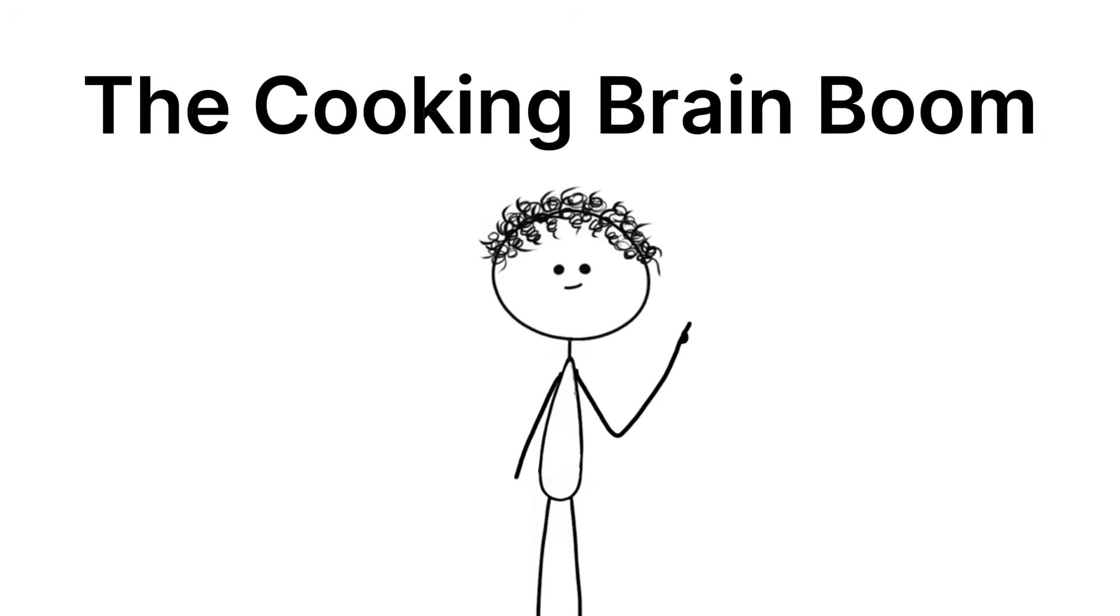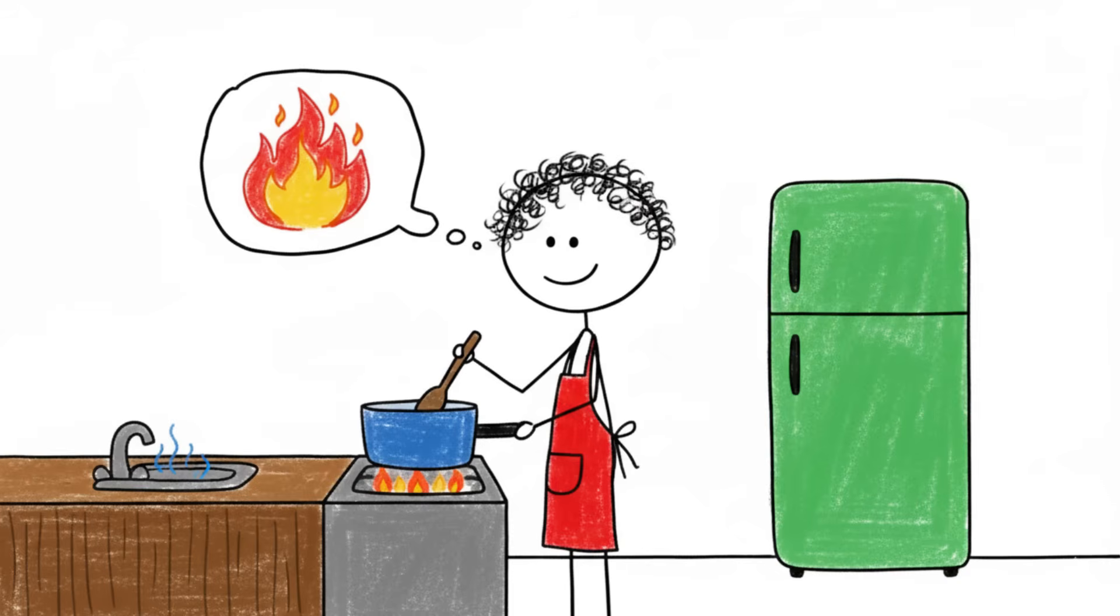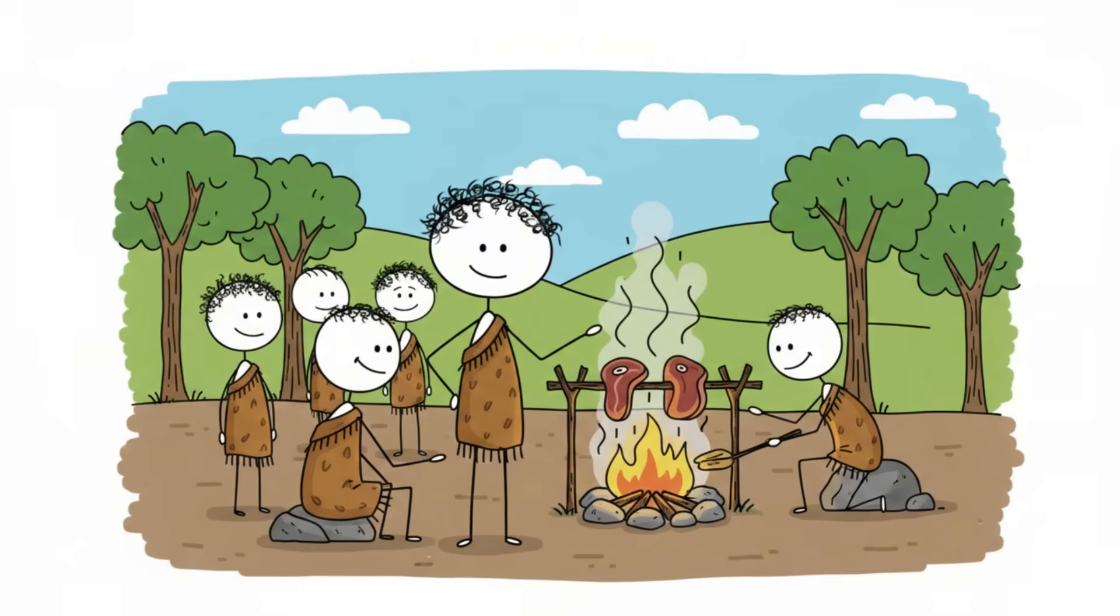Number 5: The Cooking Brain Boom. If you're wondering why your brain is currently capable of understanding this complex chain of sarcasm, you can thank fire.